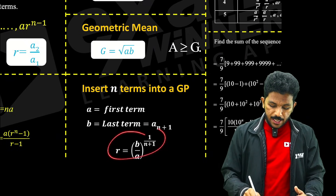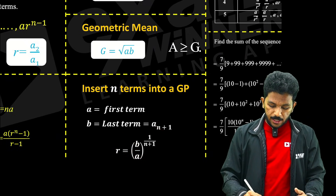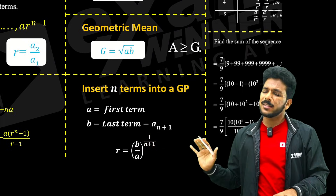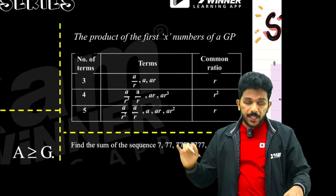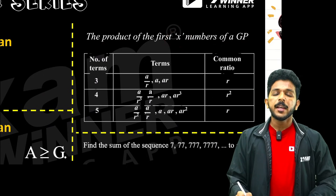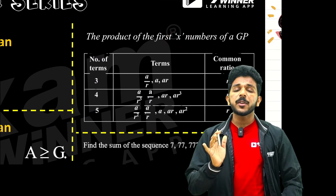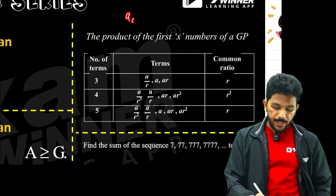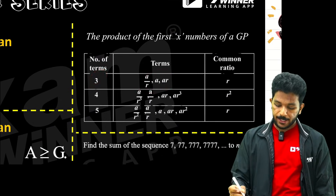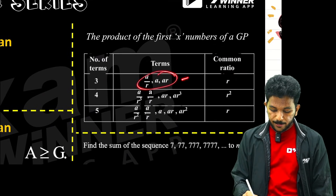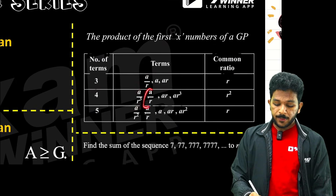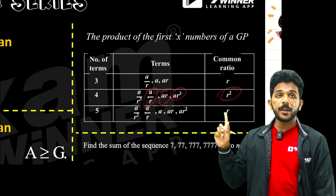The formula uses last term divided by first term raised to 1 by N plus 1. For the product of terms of a GP: three terms are taken as a/r, a, ar. For four terms: a/r³, a/r, ar, ar³ with common ratio r squared. For five terms: a/r², a/r, a, ar, ar² — if you multiply them, you get a raised to 5.